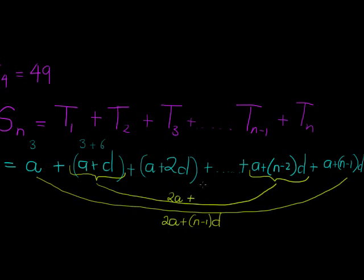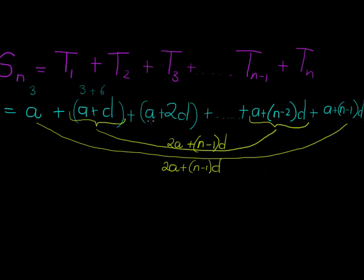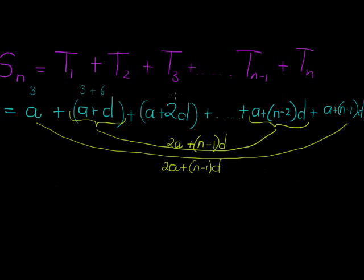Go and multiply this out and confirm that's what you get. Actually, if I take this term and the third last term, I'm also going to get that. So as I group them in groups of two, each time I get that answer. So I'm going to get 2a + (n-1)d—how many times am I going to get that? Well, I have n terms, but I'm grouping them two by two, so it's n/2.